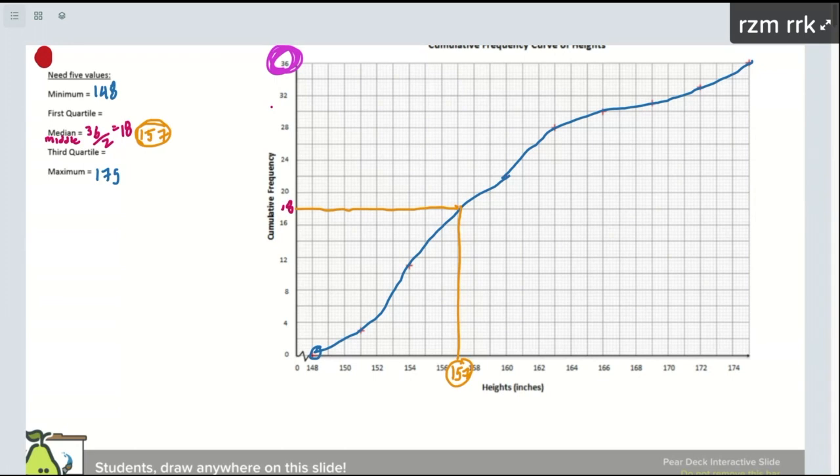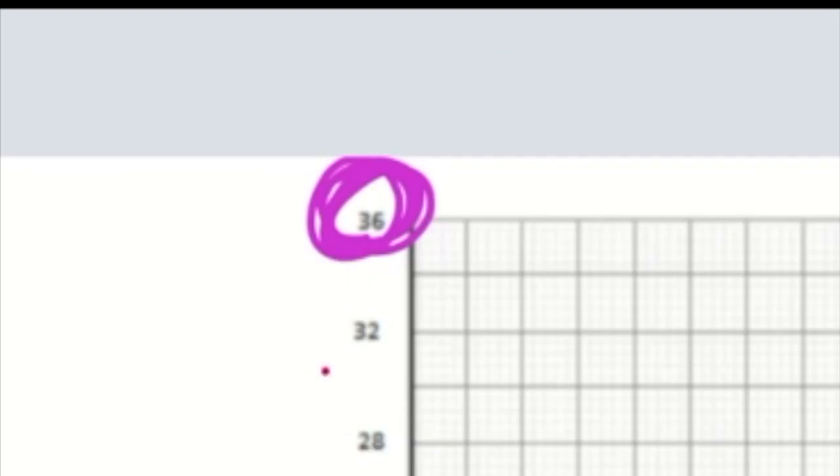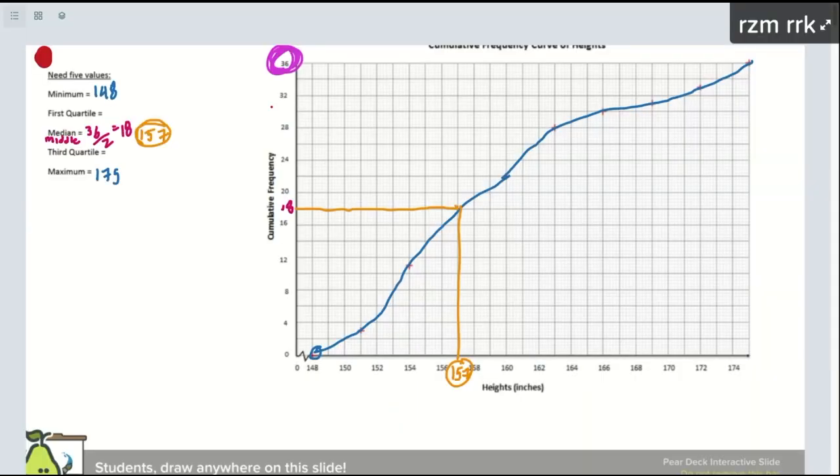The next thing is we need to find our quartiles. So if anybody remembers what quartile means. So all of you are actually correct. They're fourths. They're 25%. Yes. So what you're doing is you're saying, okay, I know that my biggest number is 36. Half that's 18. I want fourths. So I can do 36 divided by four, right? So if I divide that by four, that gives me nine.